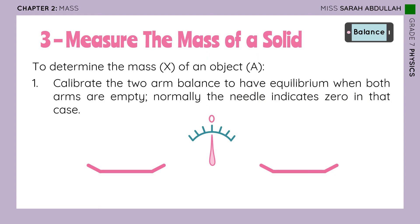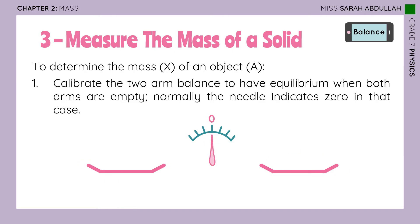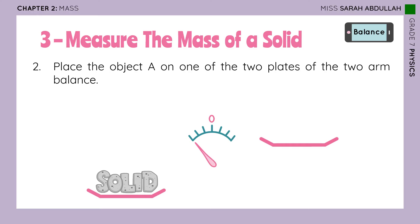I'll repeat the steps so you remember them. To determine the mass X of an object A, which is a solid: first, calibrate the two-arm balance to have equilibrium when both arms are empty — normally the needle indicates zero, meaning the two plates are at the same horizontal level. Then place the object A on one of the two plates. The needle goes to the side that is heavier — it inclines or rotates toward the heavier side.